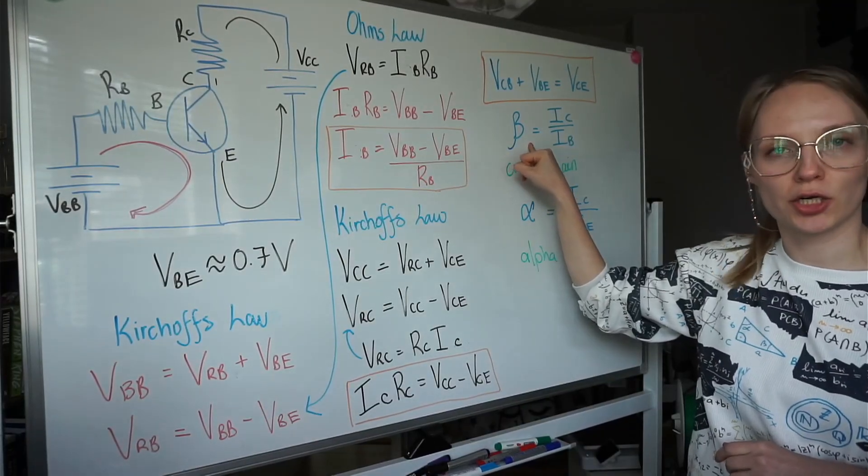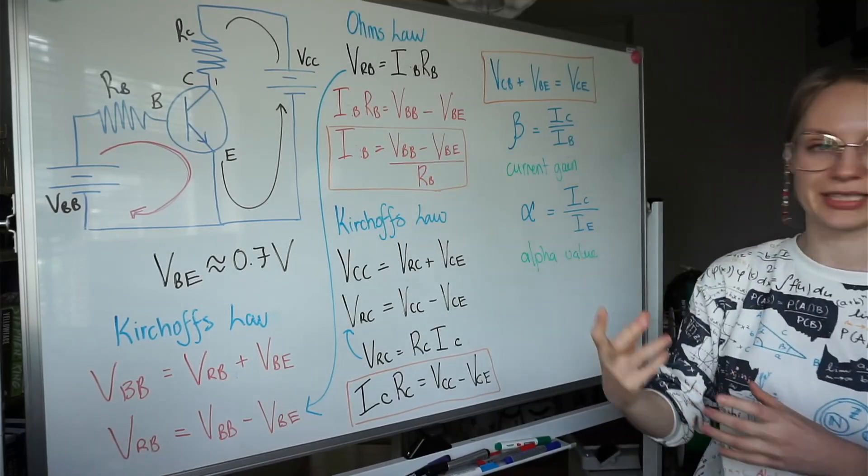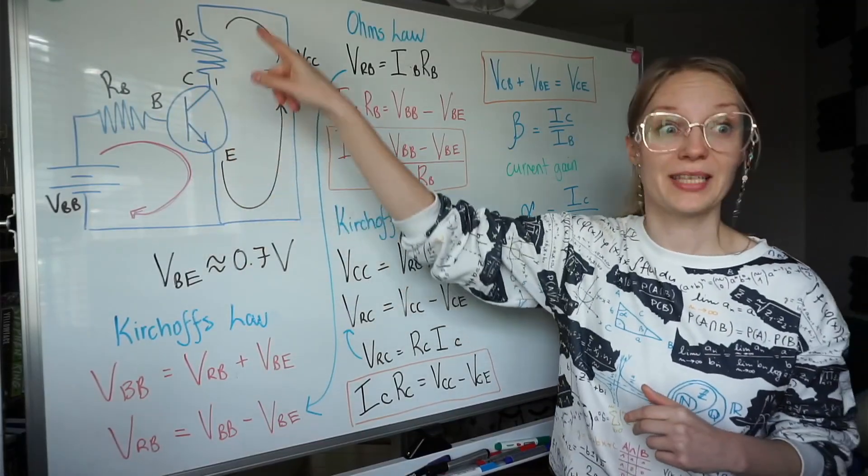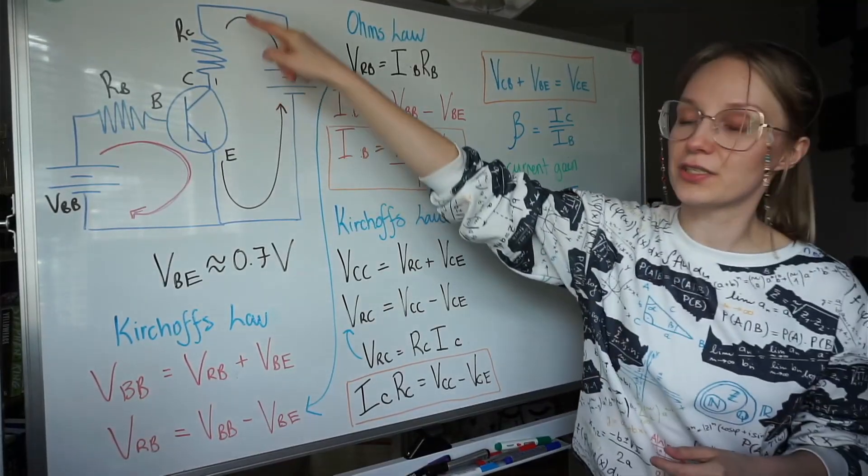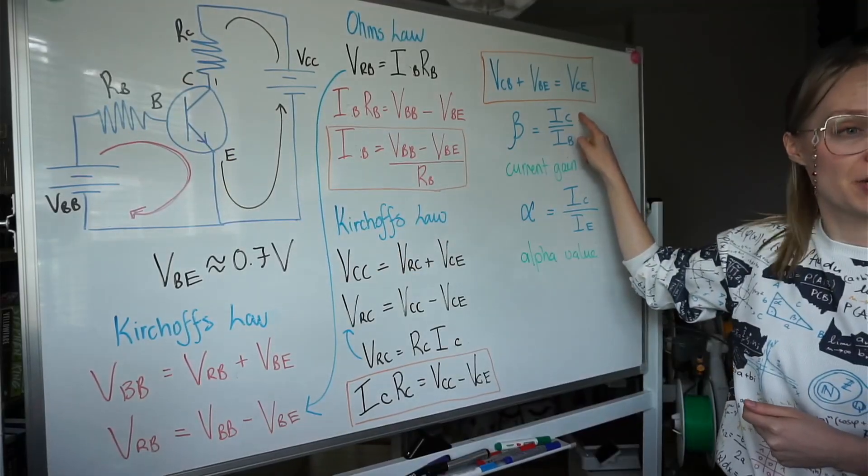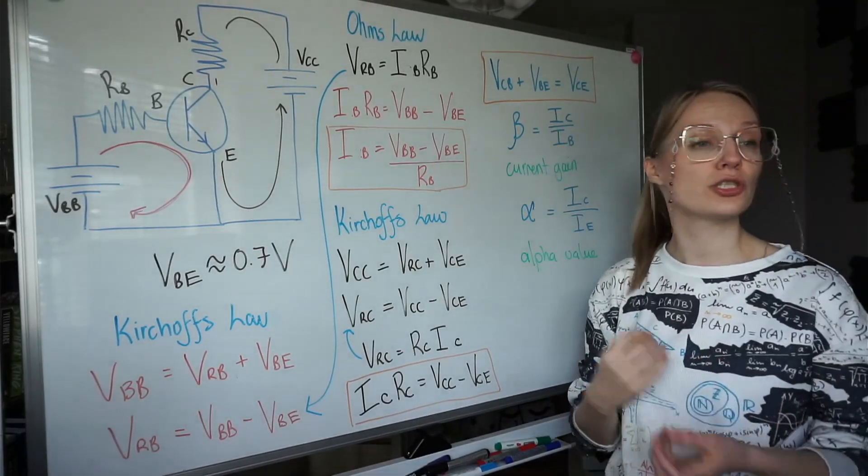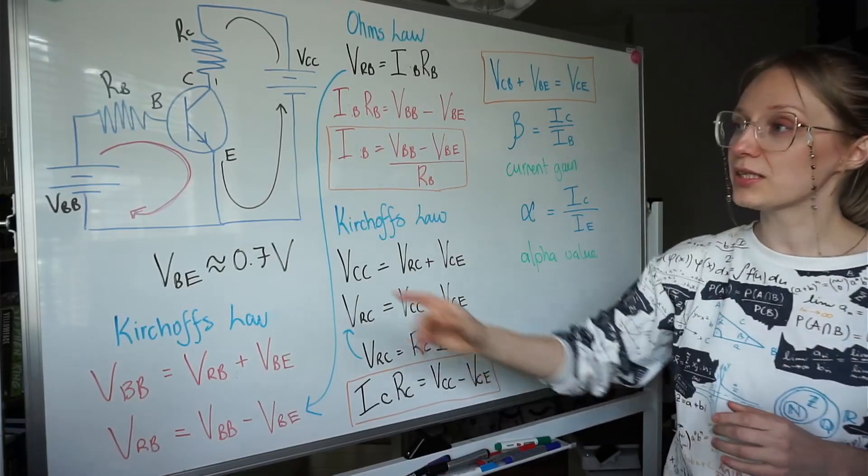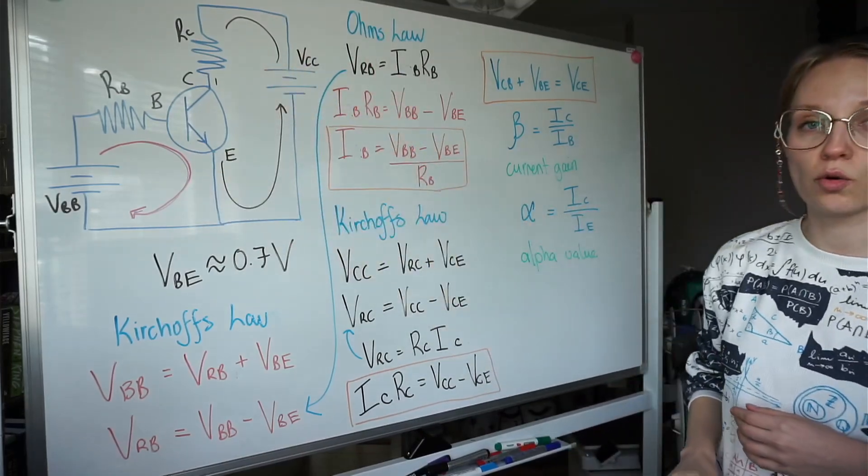Beta is what's called a current gain value. Most data sheets of transistors will actually have this value. BJTs are used as something called amplifiers - tiny current here equals really big current here. So it amplifies the input signal that you have in your system. So IC is the current in this loop divided by the current in this loop. Very big number divided by very small number equals very big number. Usually these numbers are about 200 to 300 to 400. No unit because it's a ratio value. That means if you get one milliamp here and your beta value is 200 you will get 200 milliamps in your black loop.